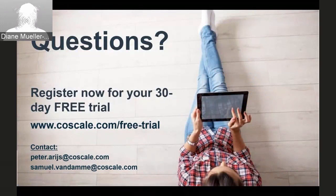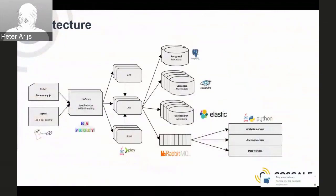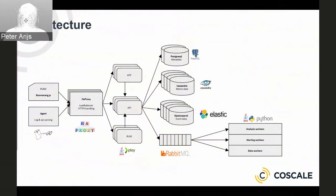There was a question answered offline about our architecture and where we store data. Our metric data is stored in Cassandra, event data in Elasticsearch, and some metadata in Postgres. Our entire architecture is designed for horizontal scaling and can also be deployed on-premise in a Dockerized environment. We recently did a proof of concept where we handled over a million data points per second.